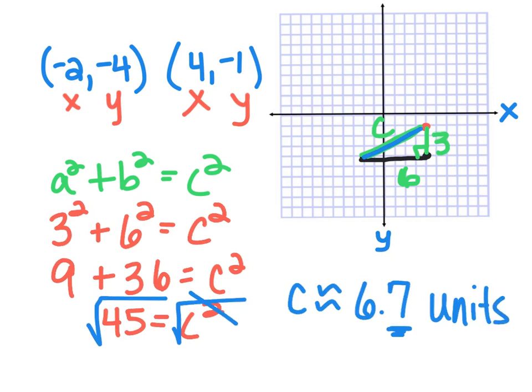You could have also done this another way. I'll trace it in orange — if I put another point up here, I can make a different right triangle. See how I just made a right triangle with the corner on the other side? Either orientation works. If you count, that leg is also three long and this one is also six long, and you'd still find the same hypotenuse.